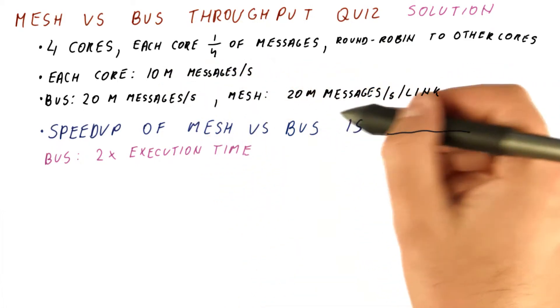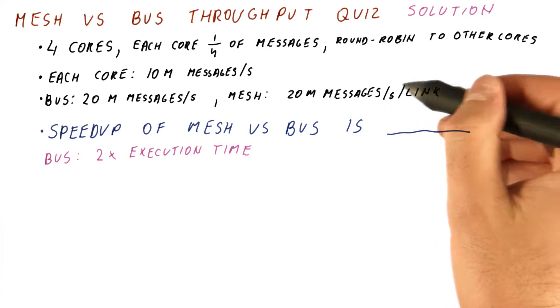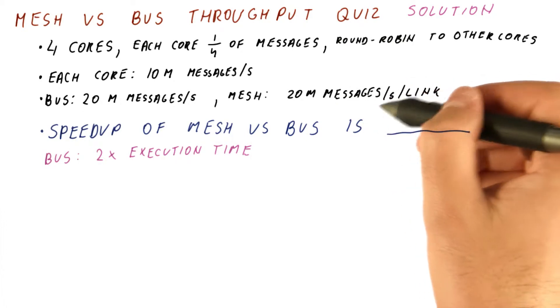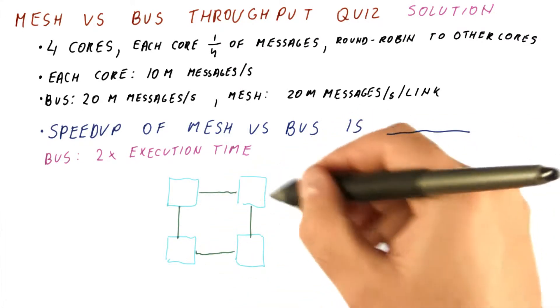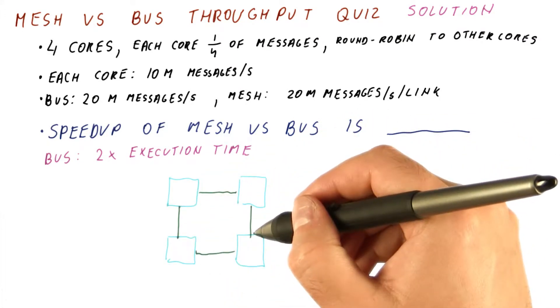On the mesh, we can support 20 million messages per second per link. So now the question is, do our links get saturated? So let's see what we get on a mesh like this in terms of traffic.